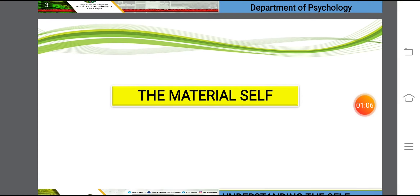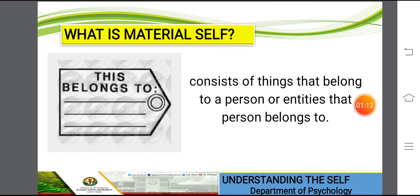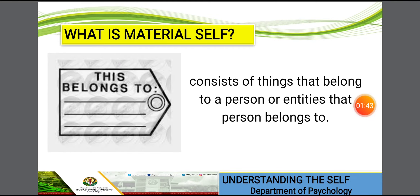So what is material self all about? It consists of things that belong to a person, or entities that a person belongs to. For example, if you are traveling outside the country or to other islands like Visayas and Mindanao, you'll have luggage and should attach a personal tag with your identification number and address, so that if your luggage is misplaced, someone could return it easily.